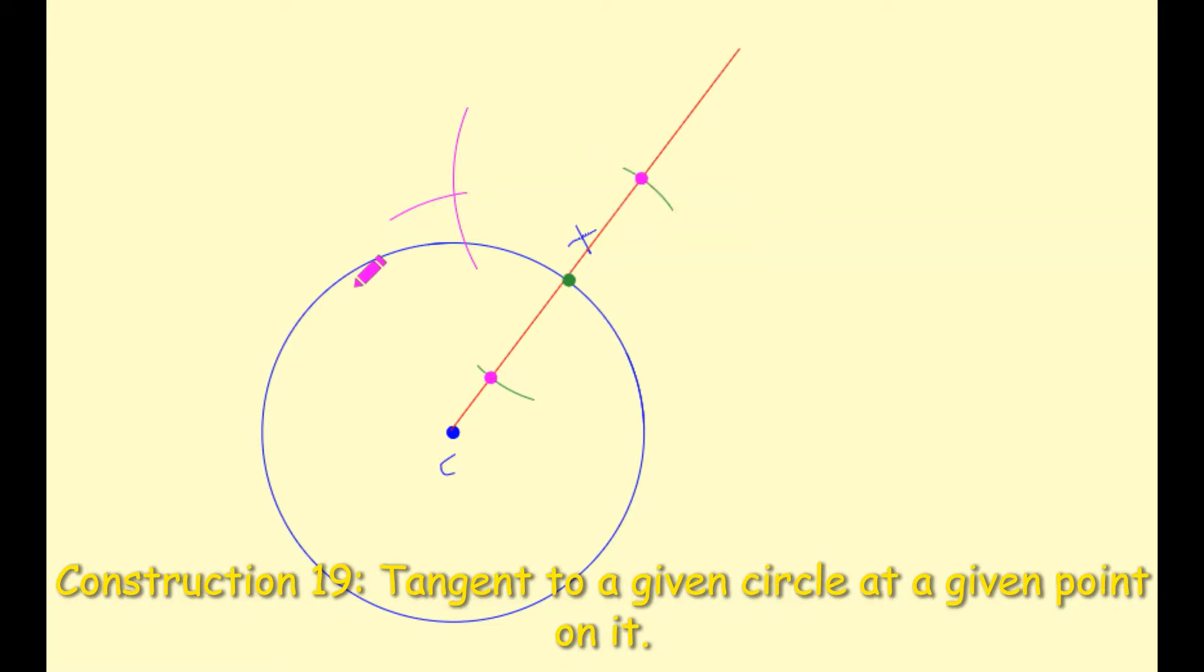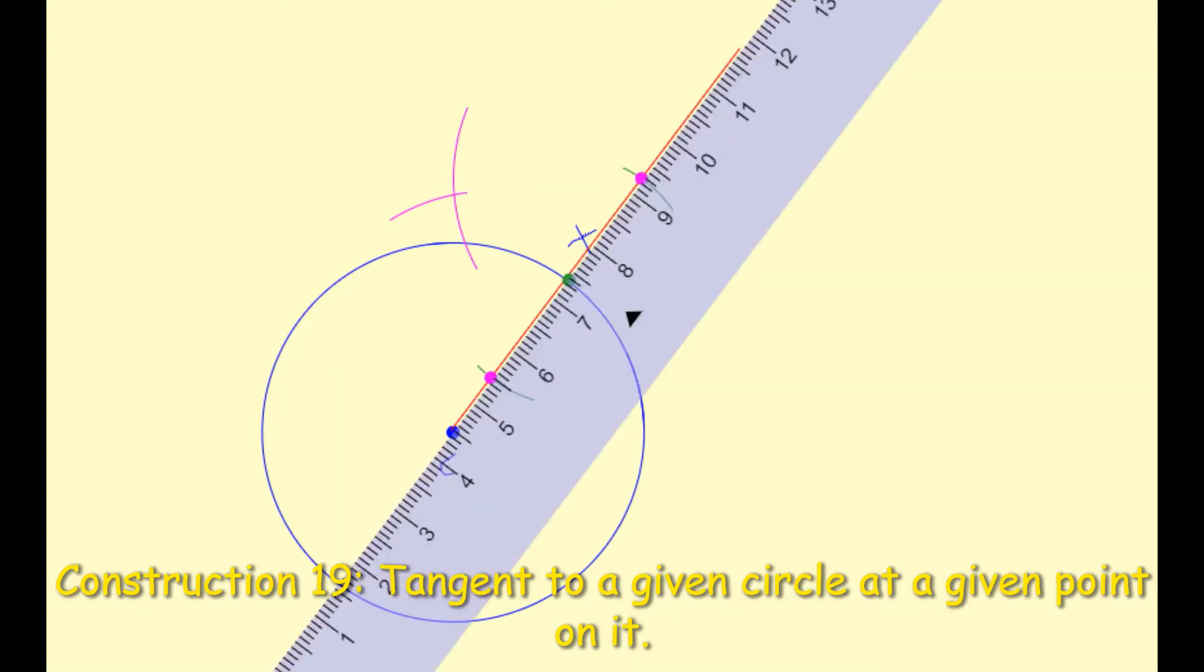Next thing I'm going to do with my ruler and my pencil, I'm going to connect or draw a line between the point X and through where these two arcs are intersecting, these two purple arcs. So taking out your ruler again, draw that line. So I'm sliding it up.